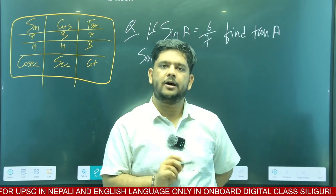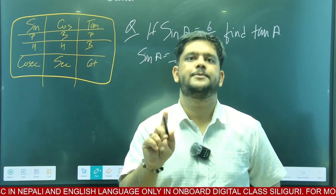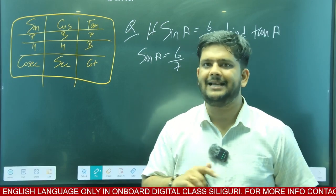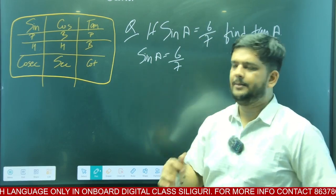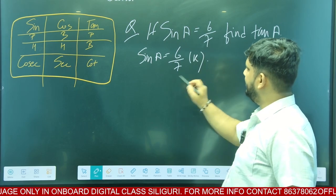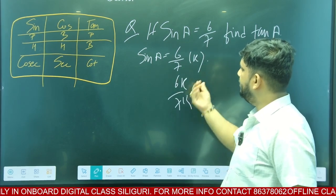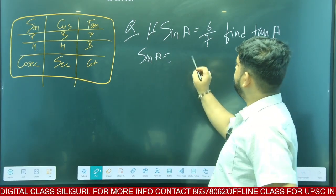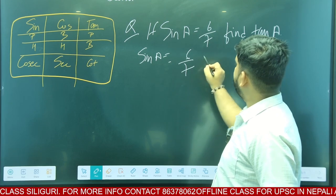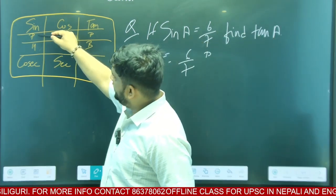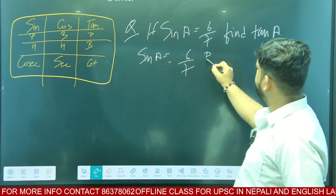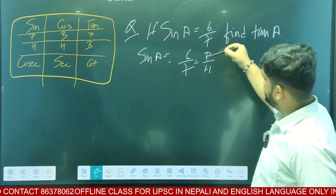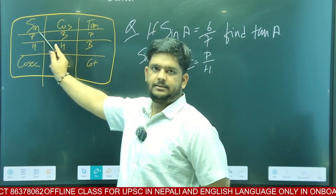Remember one thing — this is a comparative exam, objective type. In class 10 you would learn subjective. Now 6 by 7 directly — it is constant. That means 6k and 7k. You have to say the direct value: 6 by 7. That means 6 is perpendicular. Sin is perpendicular by hypotenuse. So perpendicular is 6, hypotenuse is 7. What is the base? We need to find the base.